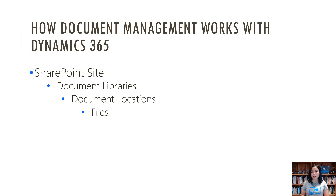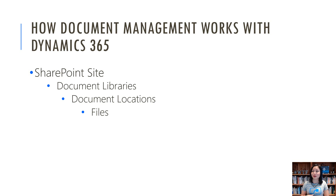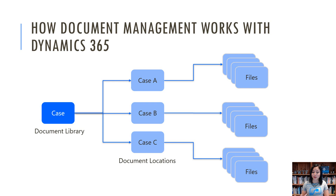Document management works like this today in Dynamics 365. We have a document library, which is a repository for the documents. These documents are stored in document locations, which are essentially folders in the document library. When you use Dynamics with SharePoint and set up the configuration, you point it to a default document library. Then when you create a row in a table — for example, the case — it will create a folder that represents the document location in the default document library. In the document library, you'll have more than one document location, and in your document locations you can have multiple files.